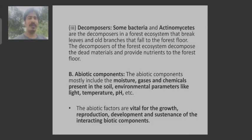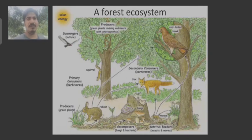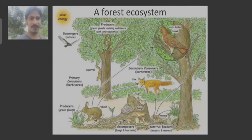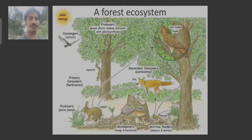The biotic components are dependent upon abiotic components for their growth, sustenance, and reproduction. Here is an example of the forest ecosystem where you can see large trees as the primary producers. The rabbit is the primary consumer or herbivore, followed by the fox and mouse as secondary consumers. The hawk is at the top of the pyramid as the top consumer, and the fungi are the decomposers of this ecosystem.